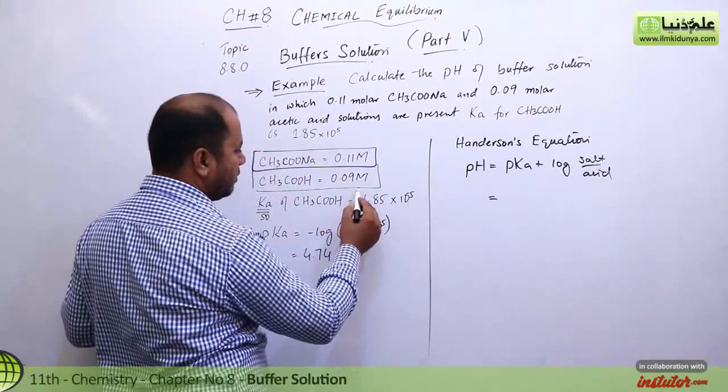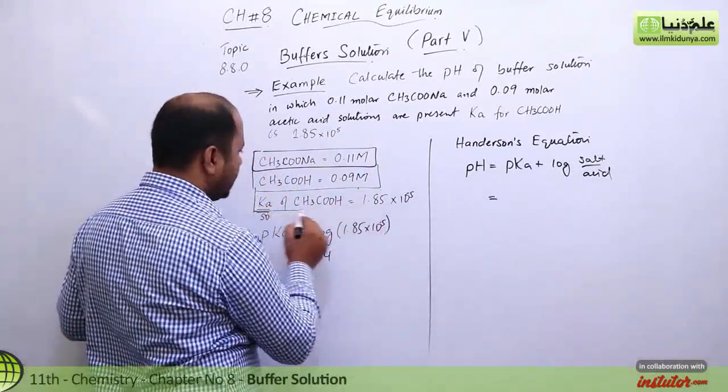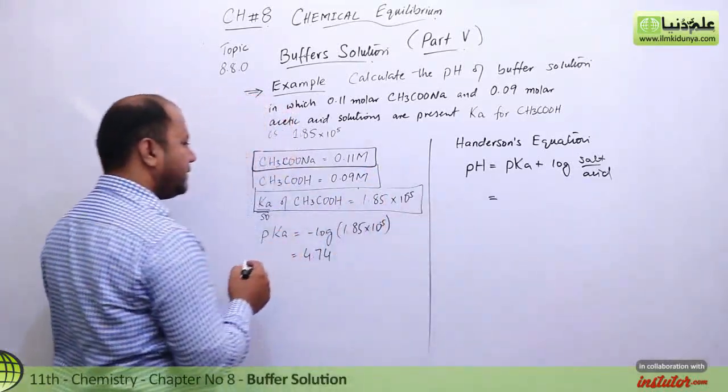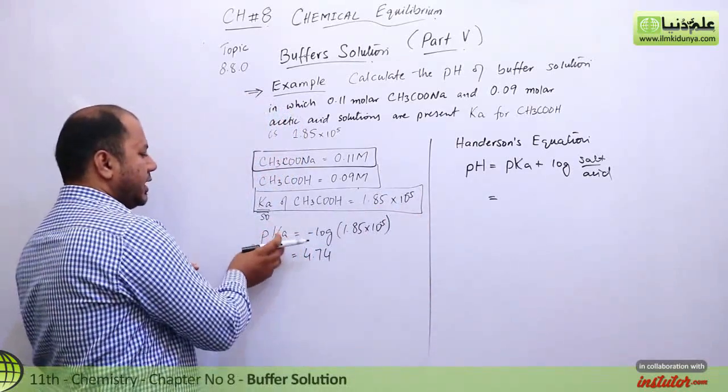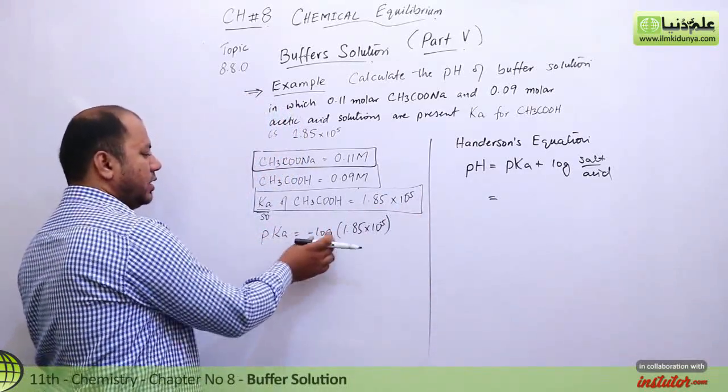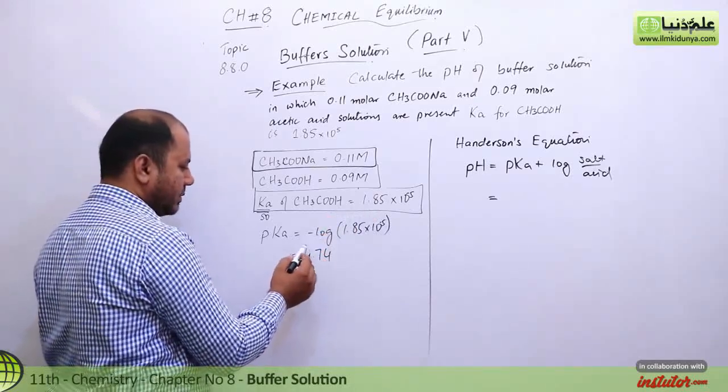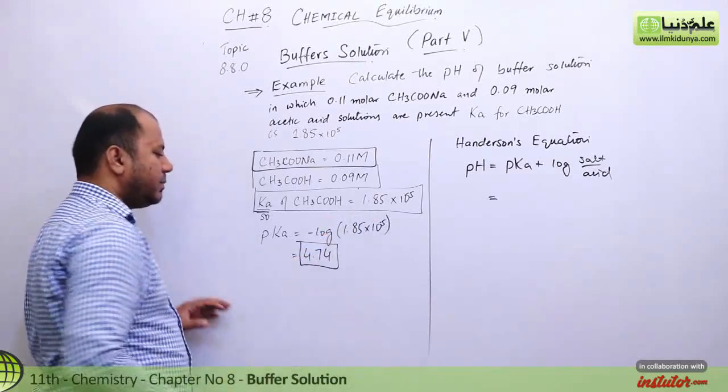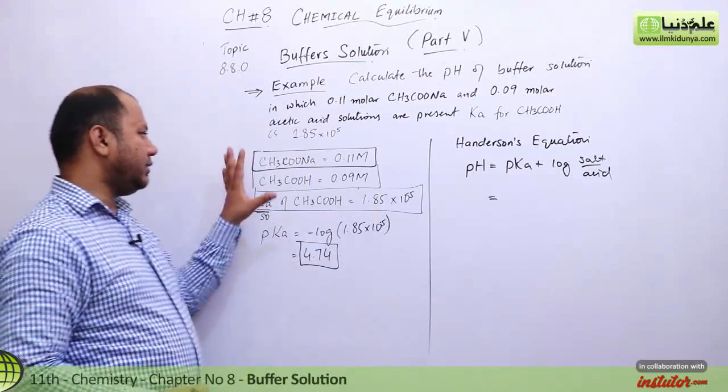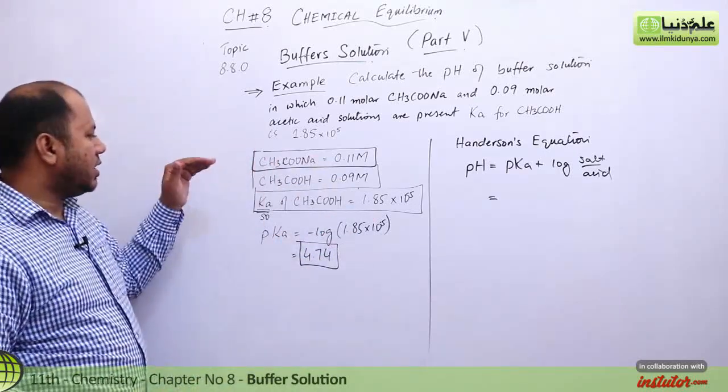We need to convert Ka to pKa. pKa means negative log of Ka. When you calculate it, you get 4.74. So pKa is 4.74 and all things are ready - we have the pKa, the salt, and the acid.